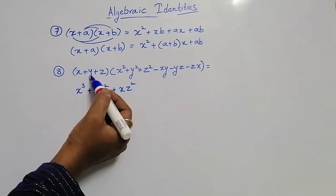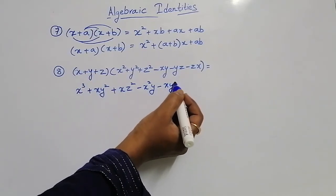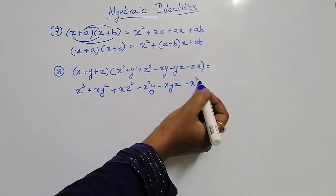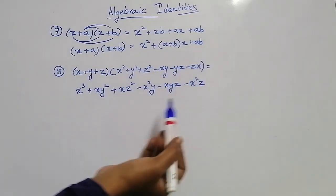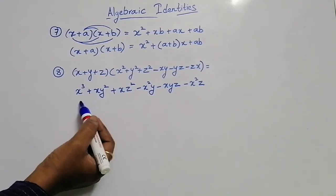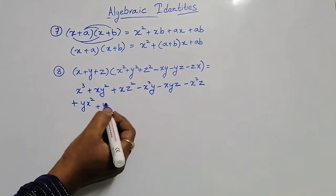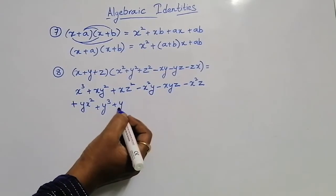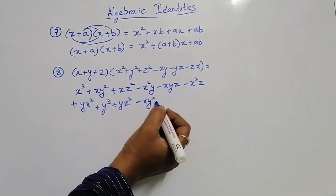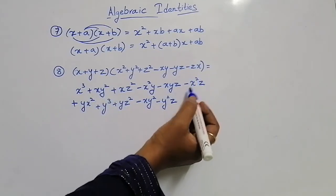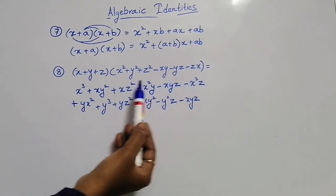Plus x into minus xy gives minus x square y, plus x into minus yz gives minus xyz, plus x into minus zx gives minus x square z. Now multiplying y with all these terms: plus y into x square is plus yx square, plus y into y square is plus y cube, plus y into z square is plus yz square. Plus y into minus xy is minus xy square, plus y into minus yz is minus y square z, plus y into minus zx is minus xyz.